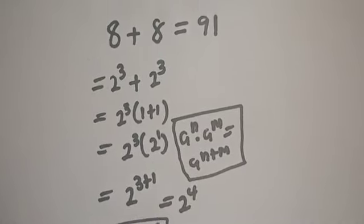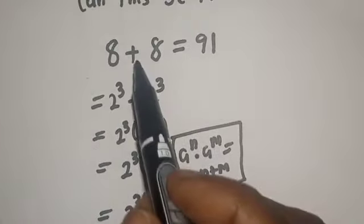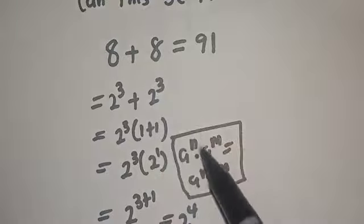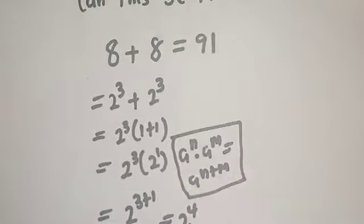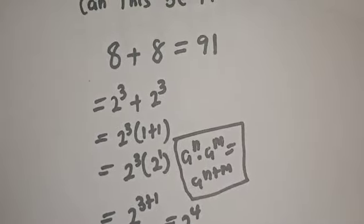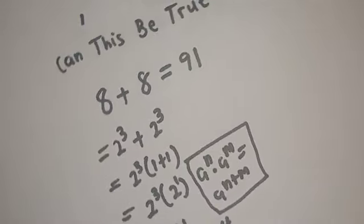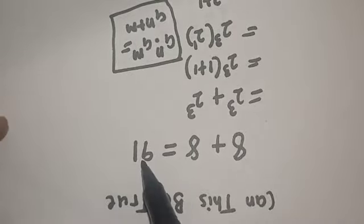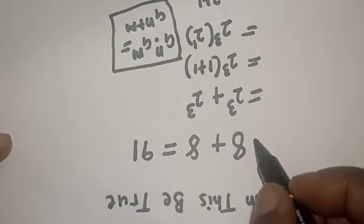We're going to perform a trick here now, and the only way this can be possible is by turning this upside down. Let's turn it upside down and see if you are going to get the answer. If you turn it upside down now, we have 16 is equal to 8 plus 8.